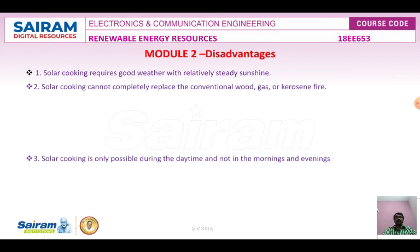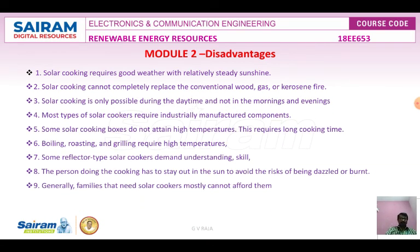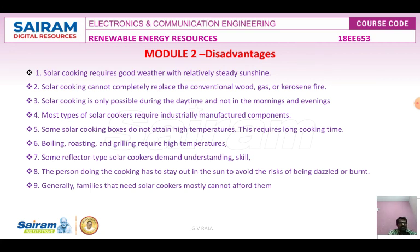Disadvantages: Solar cooking requires good weather and daily sunshine. It is difficult during windy, rainy, night-time, or cloudy conditions. Solar cooking cannot completely replace conventional cooking systems. It is only possible during daytime. Most solar cookers require individual manufacturing components. Some solar cookers do not attain high temperatures, requiring long cooking times. Boiling, roasting, and grilling require high temperatures. Some reflector-type cookers demand skill and close attention during cooking. The cook must stay out of the sun to avoid being burned. Generally, families who most need solar cookers often cannot afford them.